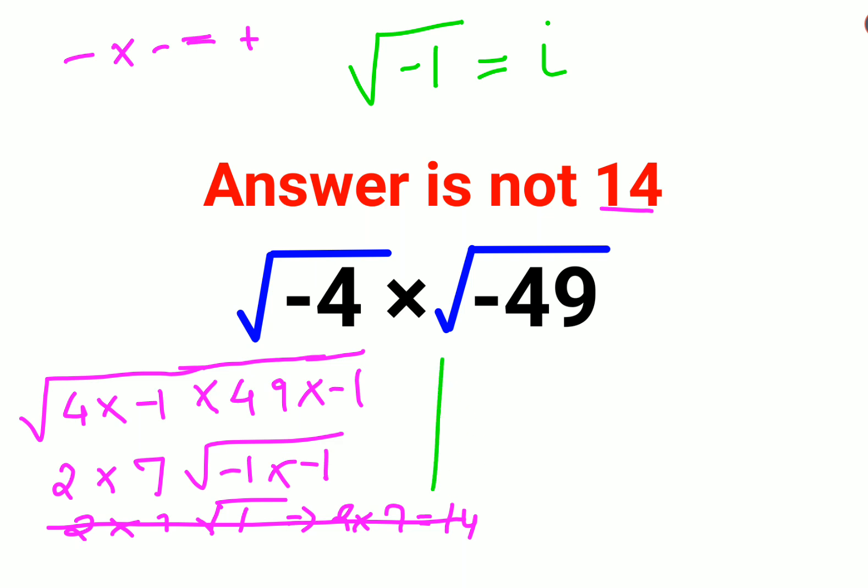So here what you got was 2×7×√(-1)×√(-1), so this became 14×i×i, correct? Now basically we got the answer as 14×i².